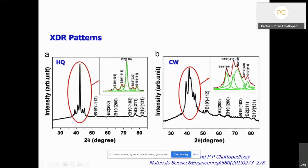These are the XRD patterns of the homogenized quenched sample and cold work sample. We can see that the high-intensity peak is from the parent phase, that is B2. So after homogenization and quenching, the parent phase remains significantly in the microstructure along with the martensitic B19' phase. In contrast, in the cold work sample, the intensity of the B2 phase is significantly reduced and the intensity of the martensitic B19' phase has increased.